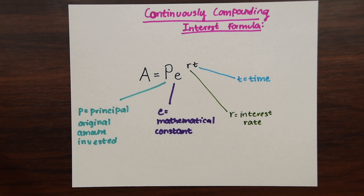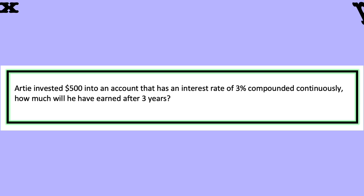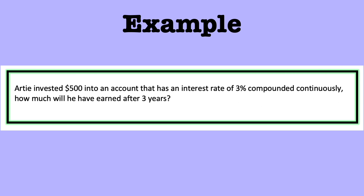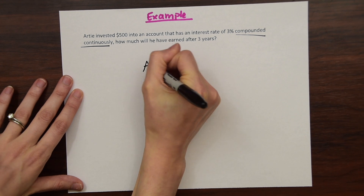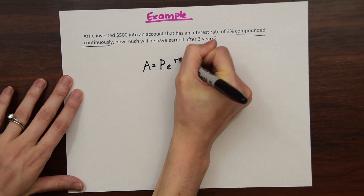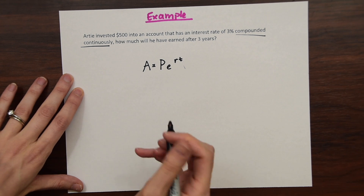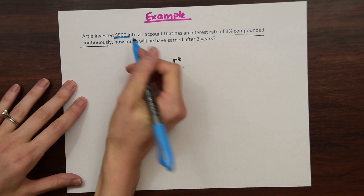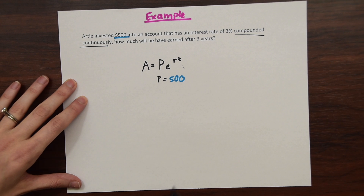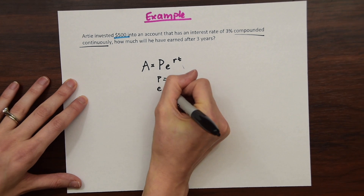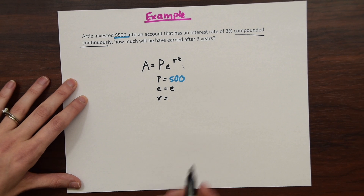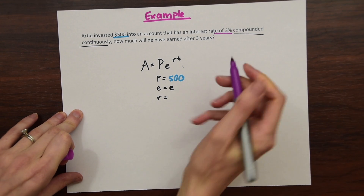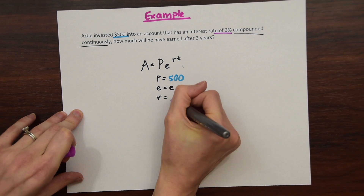So let's look at our example. You've already invested $500 into an account that has an interest rate of 3% compounded continuously. How much will you have earned after three years? First let's write out our formula: A equals P times e raised to the rt. Now let's start filling things in. P is our principal — it is $500, the amount of money we start with. e is just e, that's going to remain the same.